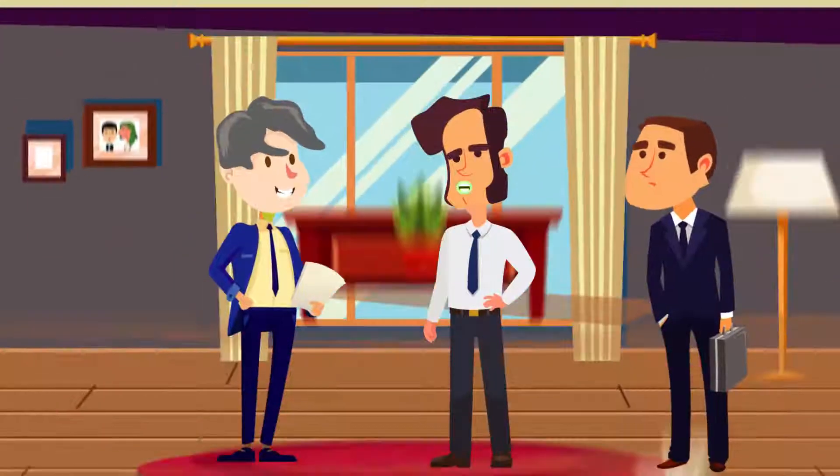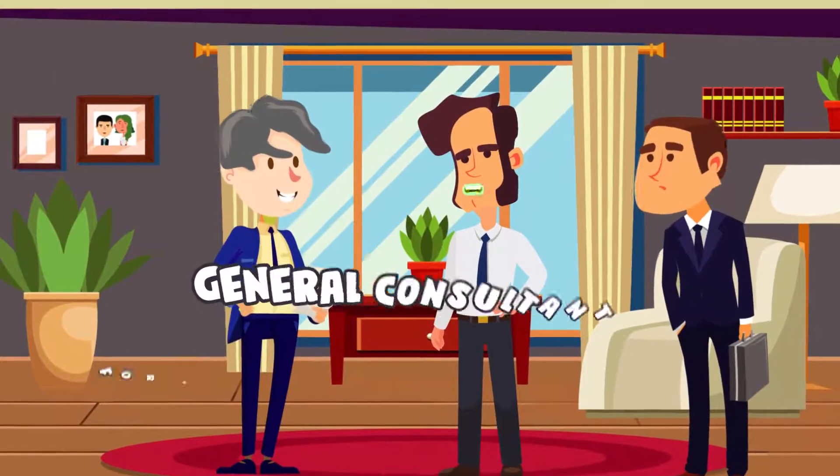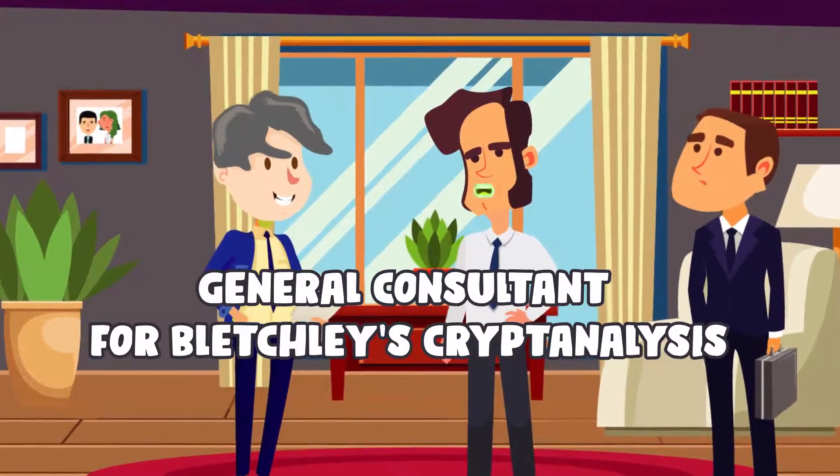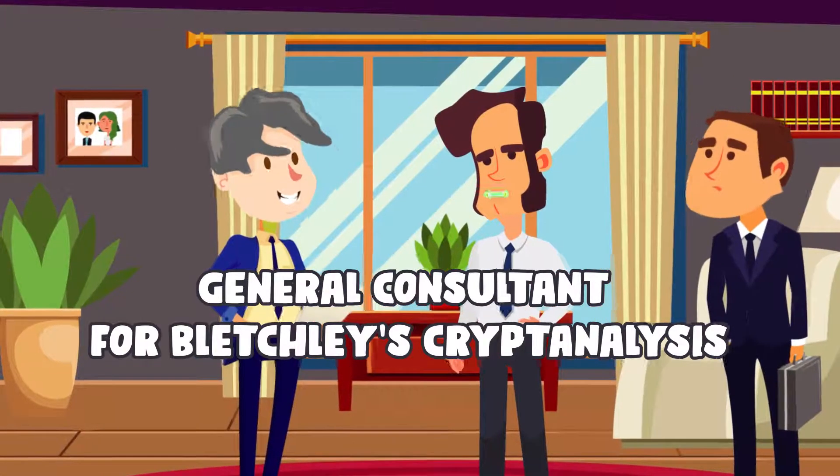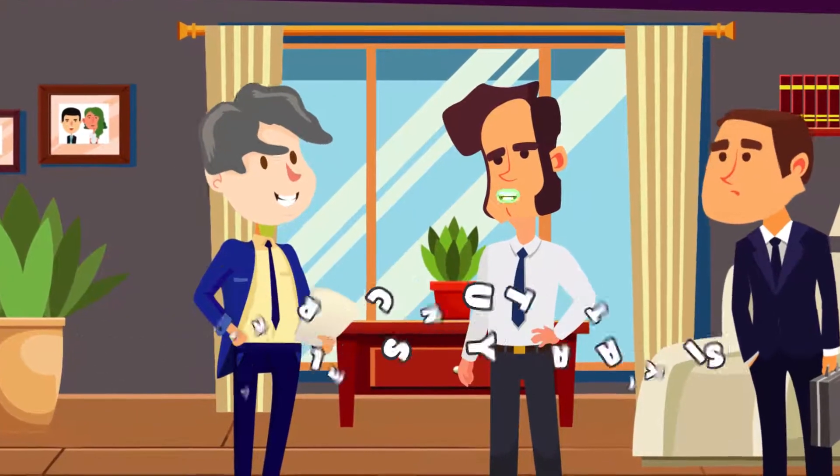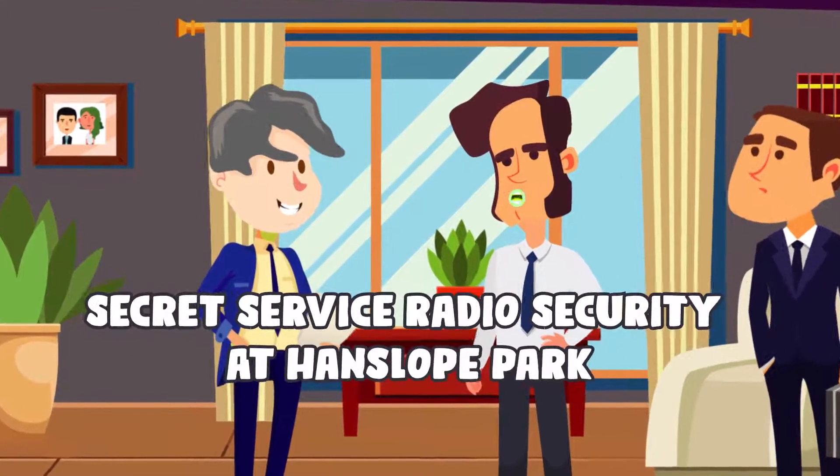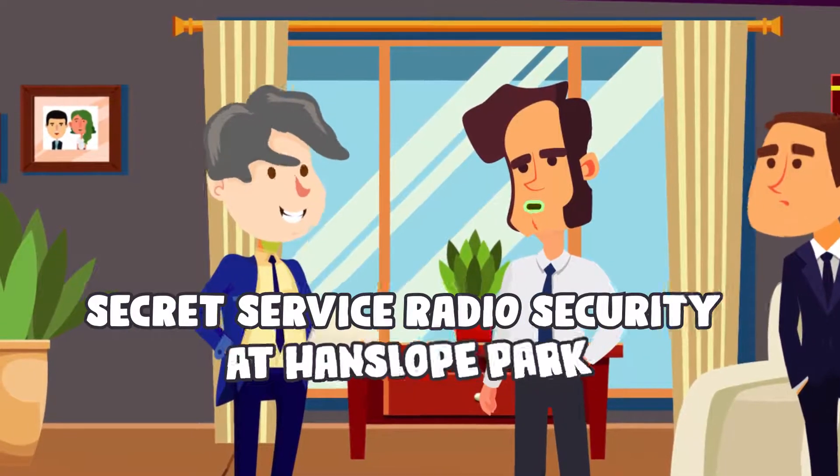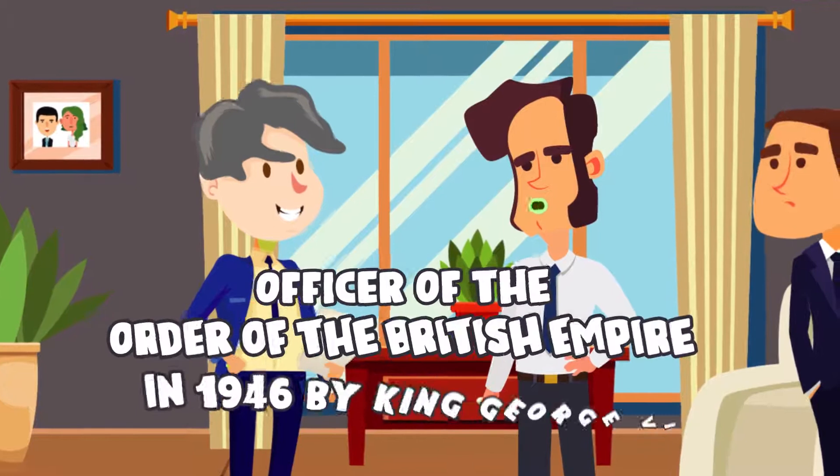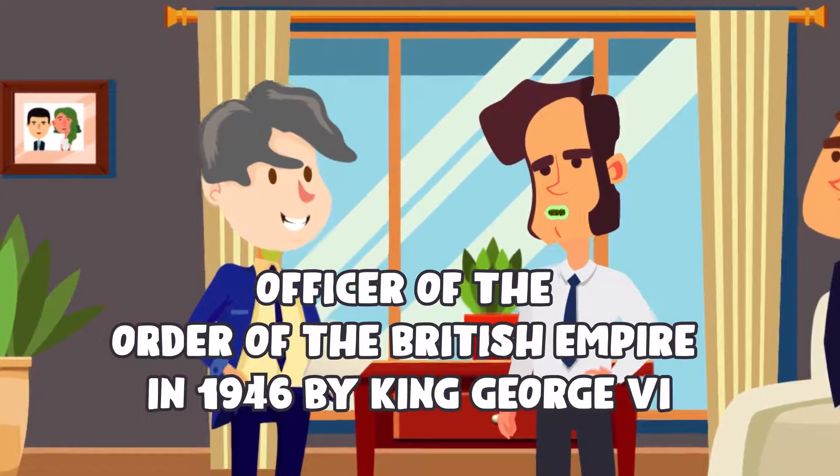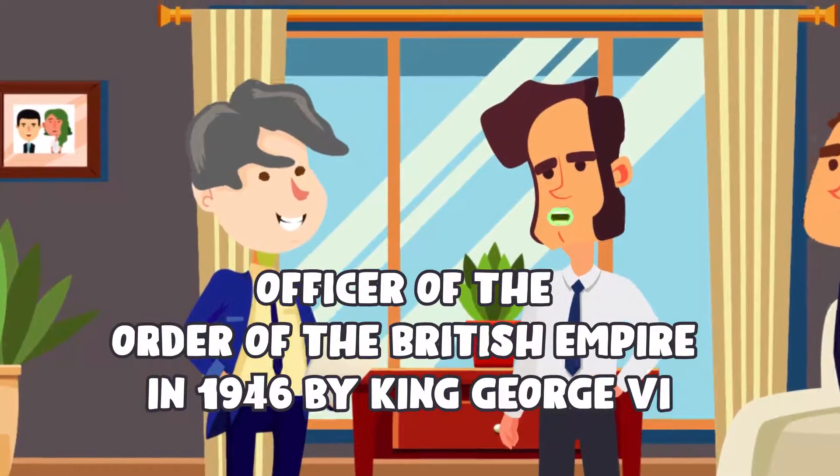After his return to Bletchley Park in 1943, Alan became the general consultant for Bletchley's cryptanalysis, where he began to pursue the idea of electronic enciphering of the telephone speech system. He later worked for the Secret Service Radio Security at Hanslope Park and developed his knowledge for electronics. Alan was appointed an Officer of the Order of the British Empire in 1946 by King George VI for his services during the war.